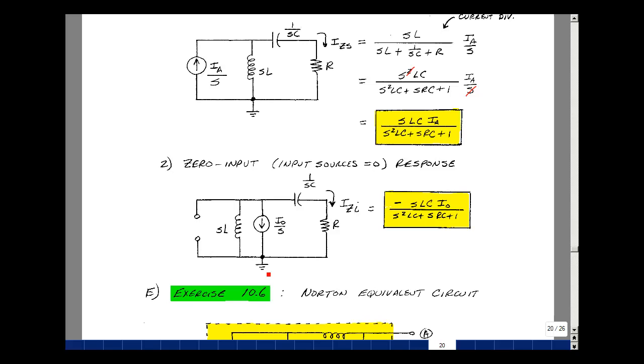We'd again use current divider for this problem. In fact, if you look at the two problems, they really are the same. We just change the source from i sub a over s to i zero over s, but pointing in the opposite direction. So we just grab the last result and simply change i sub a and replace it by minus i zero. So we get minus s LC i zero over s squared LC plus srC plus 1. And this would be my zero state response, and this would be my zero input response. And the sum of these two is our total response.